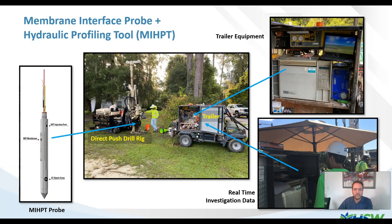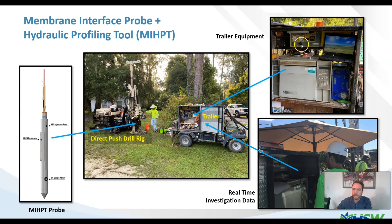For membrane interface probing, the MIP-HPT, we can have a normal configuration with direct push and a dual probe carrying all the sensors. We can see the MIP, HPT, and at the bottom, the electrical conductivity sensor. All these sensors are connected by cable to a trailer with equipment that reads and translates the data to a computer screen. You can see the logs in real time, which is the great advantage of these advanced tools — you can make decisions in the field without waiting for lab results, because you can see where your contamination is and the type of soil and lithology.